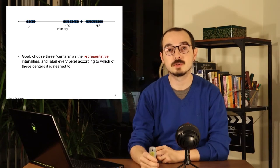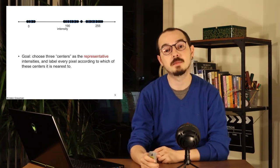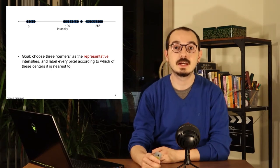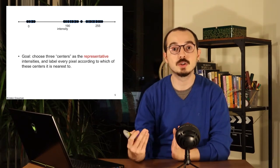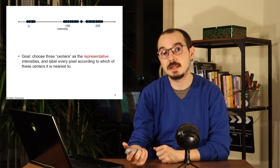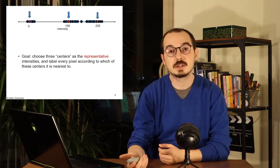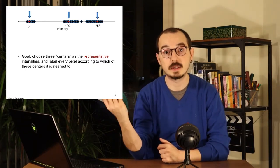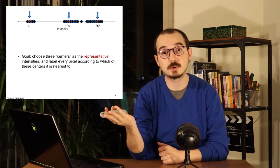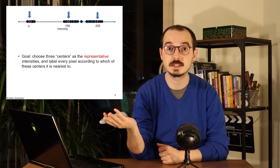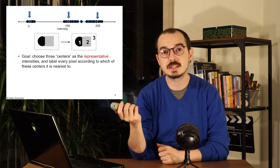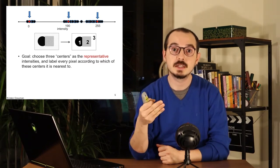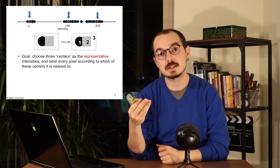Clustering is our main goal in this toy example — to select three means that will roughly correspond to the gray, black, and white that we had before as representative intensities. Then we assign each pixel depending on how close it is to that mean. In this 1D example, we can simply do the clustering by selecting whichever mean is the closest to a given pixel.